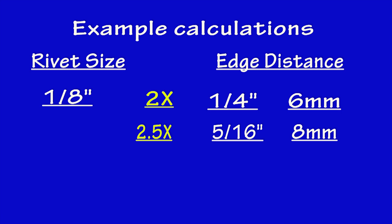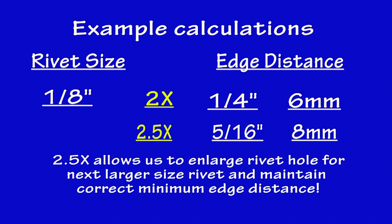Remember, the reason it's best to use the two and a half times factor is this allows us to upsize to the next rivet size diameter and still have the edge distance with margin. This might be desirable in the case that we accidentally enlarge a hole while drilling out the original rivet for a repair or modification in the future.